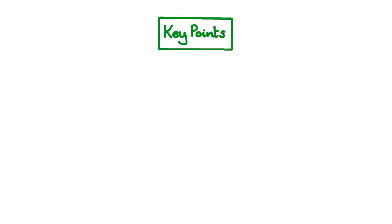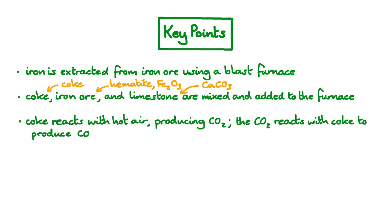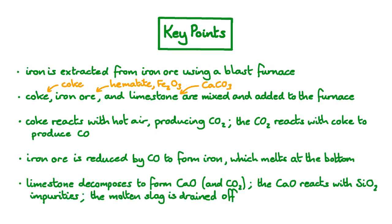Finally, let's have a look at the key points. Iron is extracted from iron ore using a blast furnace. Coke, iron ore and limestone are mixed and added to the furnace. The coke reacts with hot air, producing carbon dioxide, which goes on to react with more coke to produce carbon monoxide. The iron ore is reduced by the carbon monoxide, forming iron, which melts at the bottom of the hot furnace. And the limestone decomposes to form calcium oxide and carbon dioxide. The calcium oxide reacts with silicon dioxide impurities, and the molten slag is then drained off. This leaves a molten iron layer that is our product.